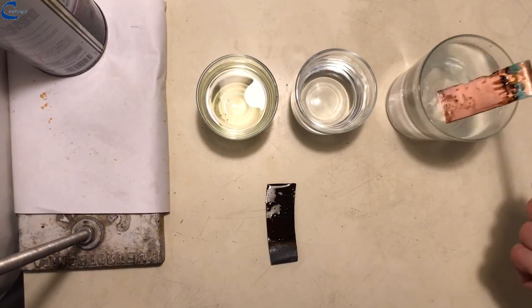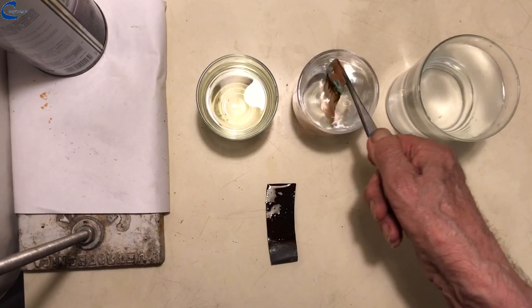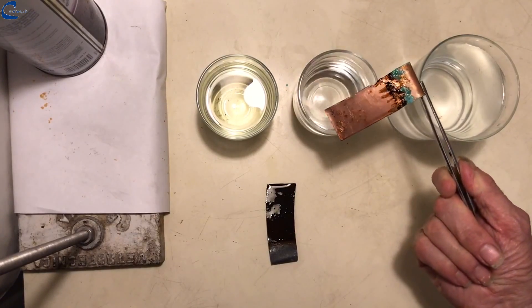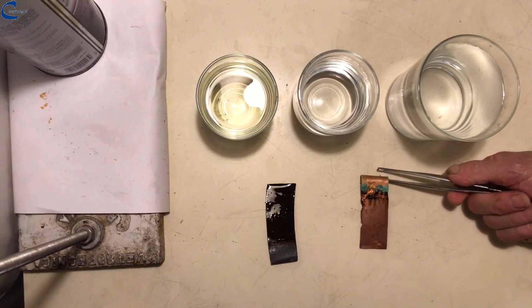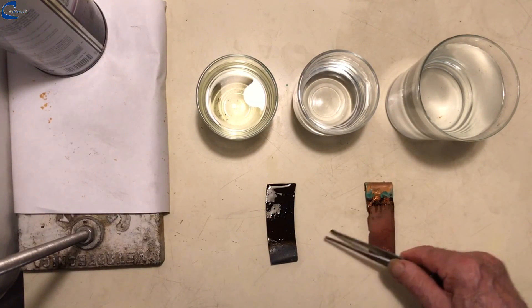On the copper electrode only a few black spots of cupric oxide are visible. For the rapid oxidation of copper, another way is needed, the one described below.